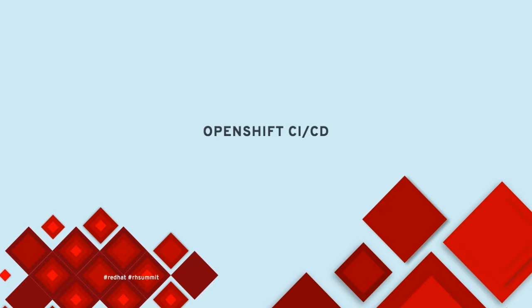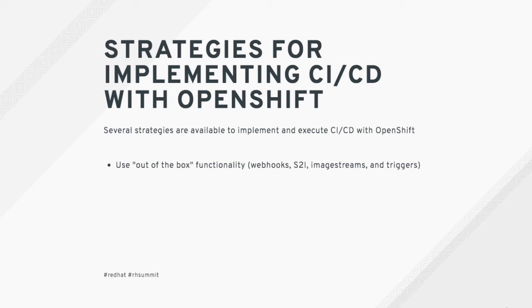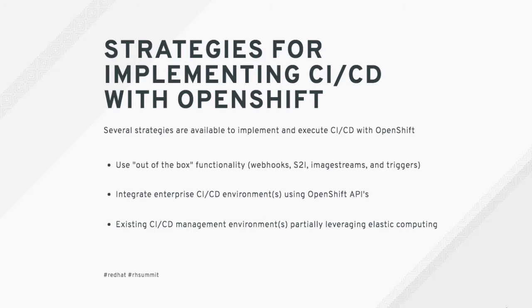Now let's get to the meat and potatoes — OpenShift CI/CD. There are multiple strategies for implementing CI/CD with OpenShift. First, use the out-of-the-box functionality provided by the platform. Second, leverage existing enterprise tooling and integrate it with OpenShift via the API. Third, extend that by using OpenShift's elastic compute resources to run external CI/CD agents. Fourth, fully containerize your entire CI/CD infrastructure within OpenShift.